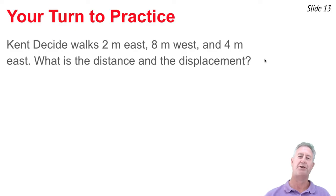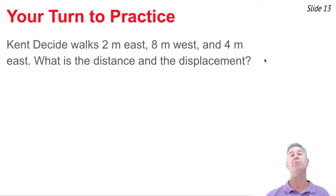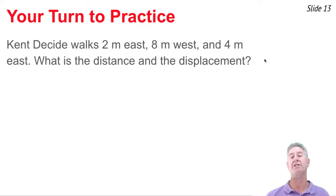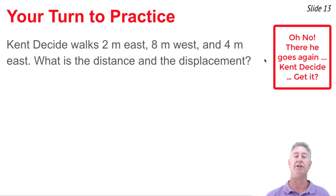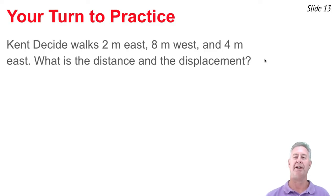Now it's your turn to practice. Here's an example problem: Kentus walks 2 meters east, 8 meters west, and 4 meters east. You have to determine what is the distance and what is the displacement. Maybe pause the video and take some time to try to solve this question. When you're ready, come back and play the video to see how you did. One recommendation: start with a diagram.